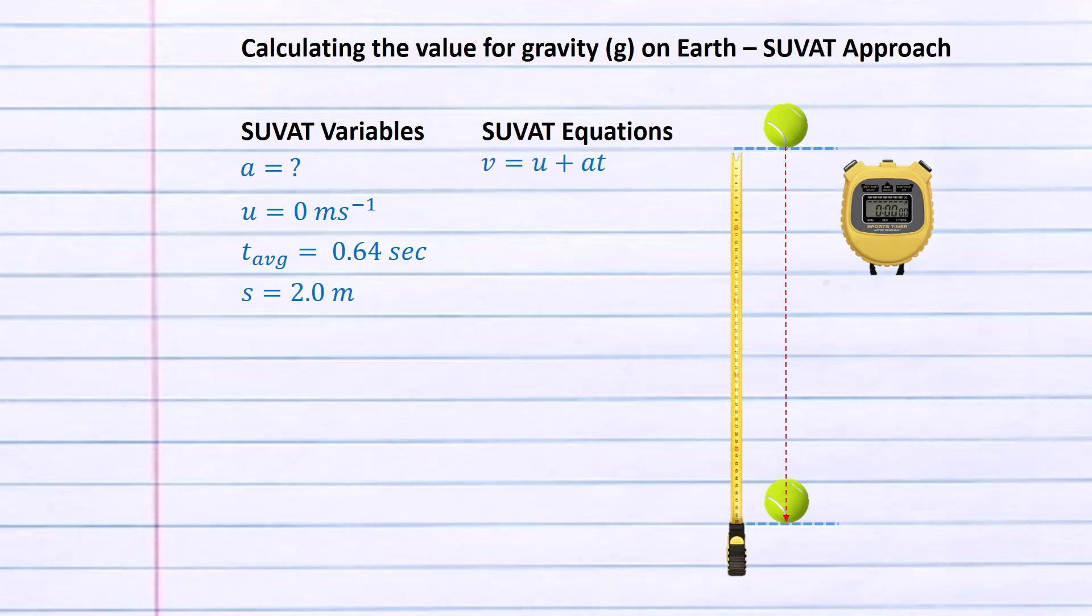Now here's our five SUVAT equations. One: V equals U plus AT. Two: S equals UT plus a half AT squared. Three: S equals VT take a half AT squared. Four: S equals a half in brackets U plus V close brackets times T. And finally five: V squared equals U squared plus 2AS. Now only one of these equations uses the variables A, U, T and S. That's our second equation, S equals UT plus a half AT squared. So here's the SUVAT equation applicable to this scenario.